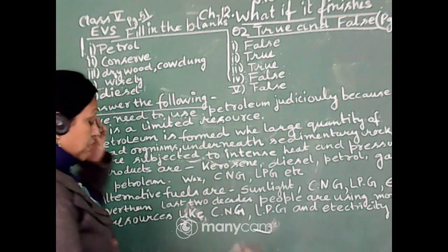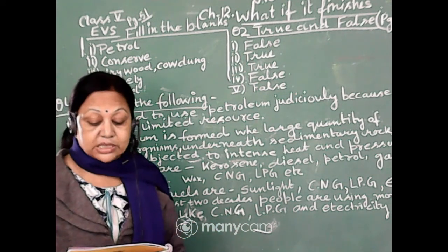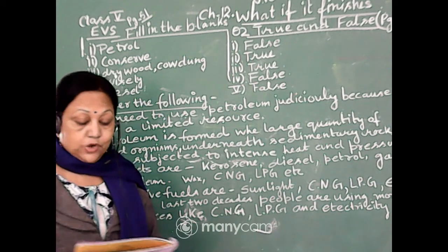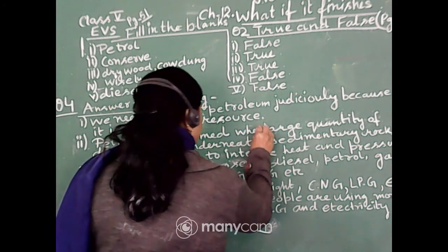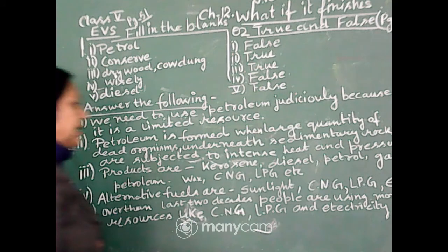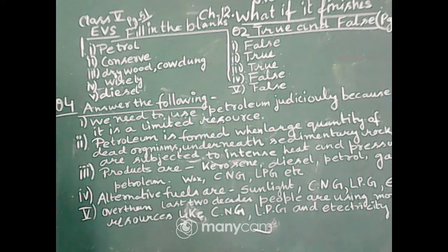Second question, question two is given here. How does formation of petroleum occur? So, the petroleum is formed when large quantity of dead organisms underneath sedimentary rock. That means, they are being sedimented. And then, they are subjected to intense heat and pressure. That time, this petroleum has been formed.